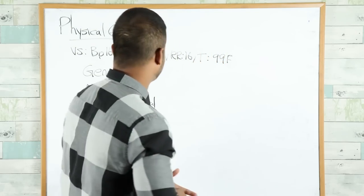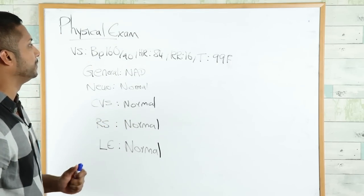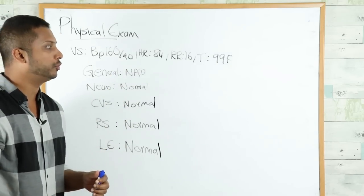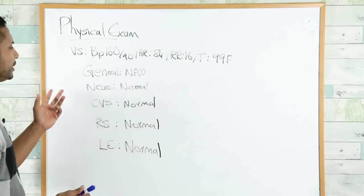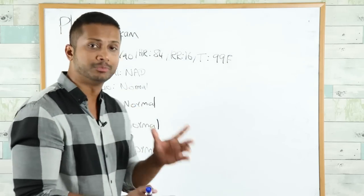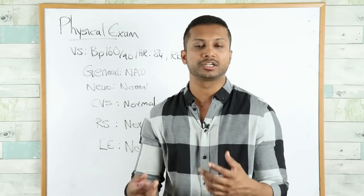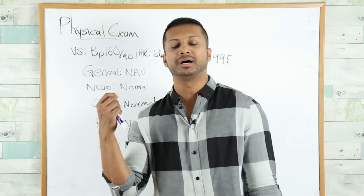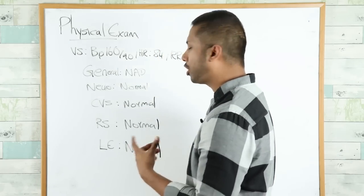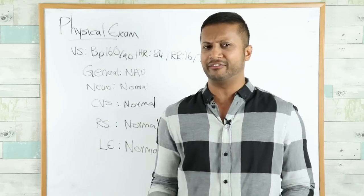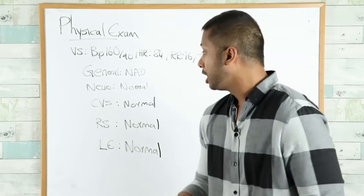Let's dive into the physical examination. The vital signs: blood pressure 160 over 90, heart rate 84, respiratory rate 16, temperature 99 degrees Fahrenheit. In the general appearance, the guy looks completely fine. On neurologic examination, his facial nerves are intact, there's no cranial nerve deficit, his muscle tone and power in all extremities are completely normal, and he's talking to you in a very fluent pattern. There's no aphasia and no neurologic deficit is present.